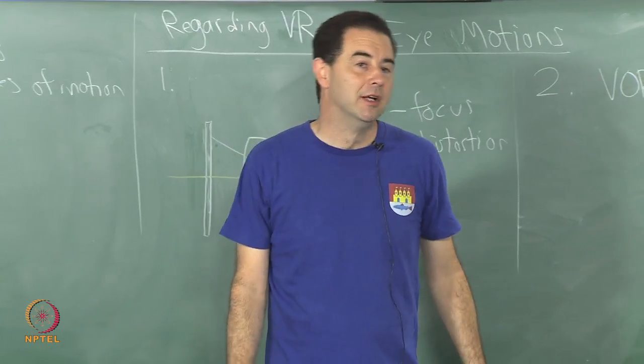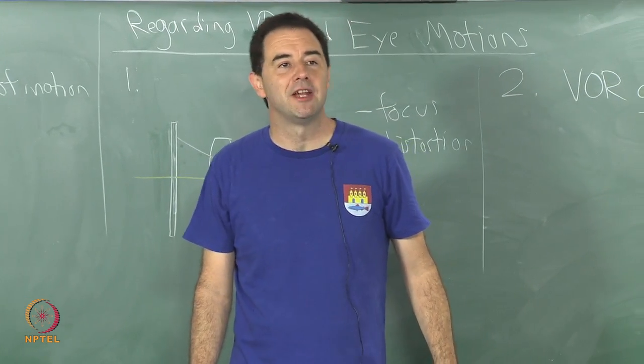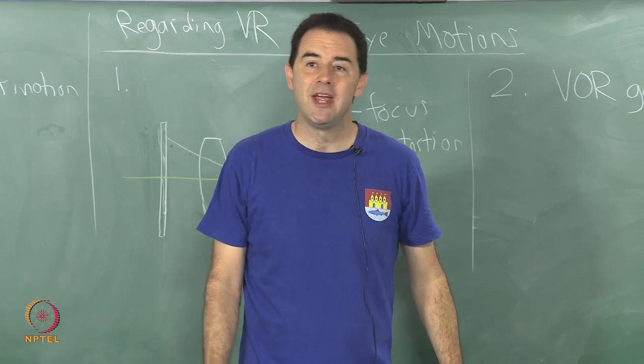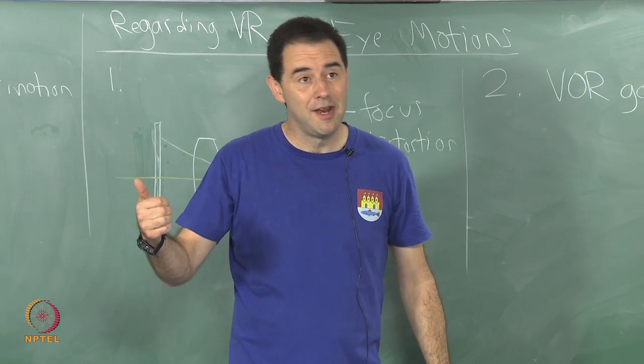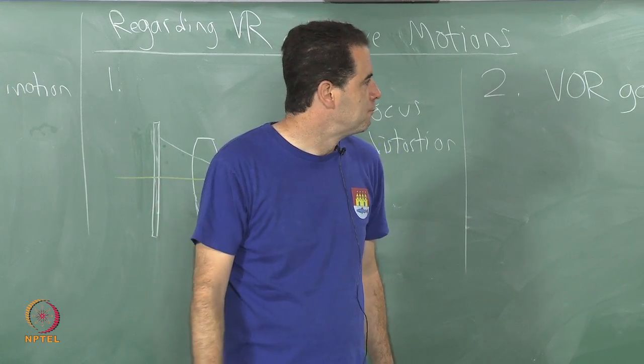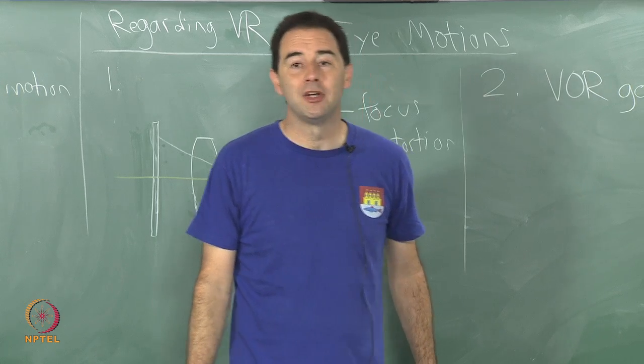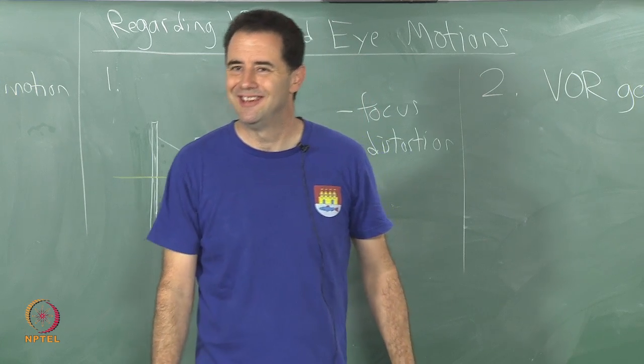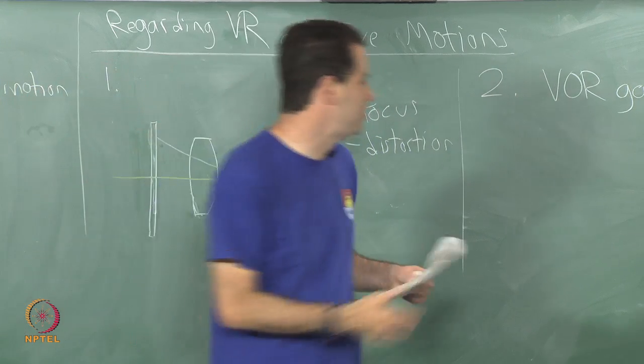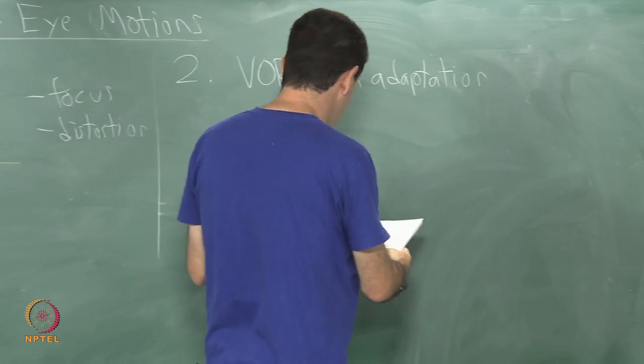The vestibular ocular reflex will nicely learn some different gain that compensates for you, but it may cause more fatigue and it may cause you to have the wrong gain when you re-enter the real world and then cause the world to seem like it is swimming around incorrectly, to cause objects to not look stationary.